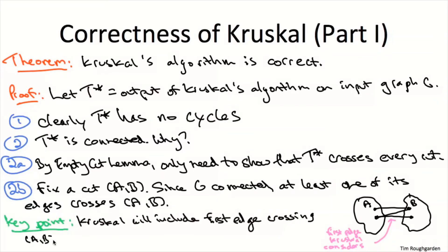The key claim is that this first edge seen by Kruskal's algorithm crossing the cut is definitely going to be included in the final output T star. By the Lonely Cut Corollary, if an edge is the sole edge crossing a cut, it cannot participate in any cycle. At the moment Kruskal encounters this first crossing edge, T star contains nothing crossing this cut yet, so including it cannot create a cycle. The first edge crossing any cut is guaranteed to be chosen. Since cut A, B was arbitrary, all cuts have some edge of T star crossing them — that's why T star is connected.